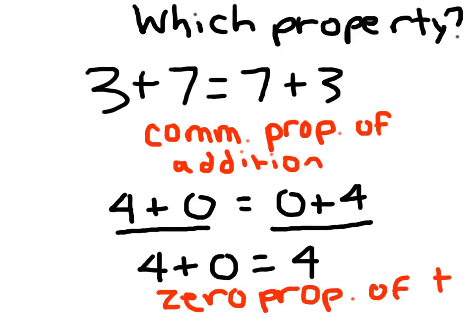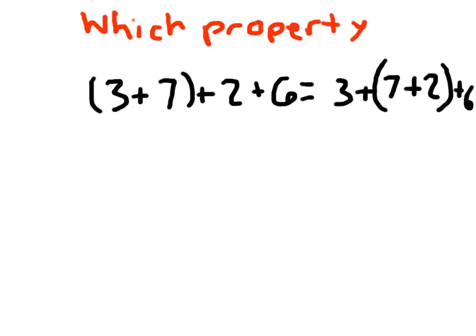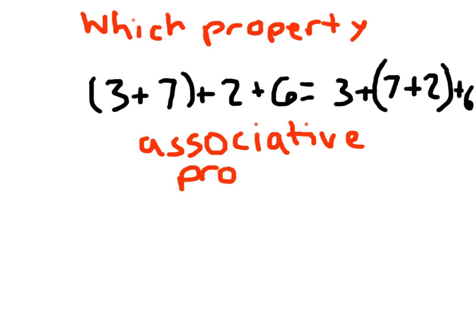Let me show you a couple more. Notice I actually have four addends here with parentheses indicating grouping — so what property is it? Hopefully you said something close to associative property — spelled A-S-S-O-C-I-A-T-I-V-E — associative property of addition.